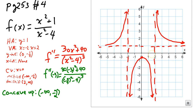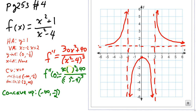Now let's test the interval between negative 2 and positive 2 by plugging 0 into the second derivative. In the numerator, 0 squared times 30 plus 40 gives positive 40. In the denominator, 0 minus 4 is negative 4, and negative 4 cubed is negative 64 — a negative number. Positive divided by a negative is negative. Since the second derivative is negative, I'm concave down on that interval between the two vertical asymptotes.